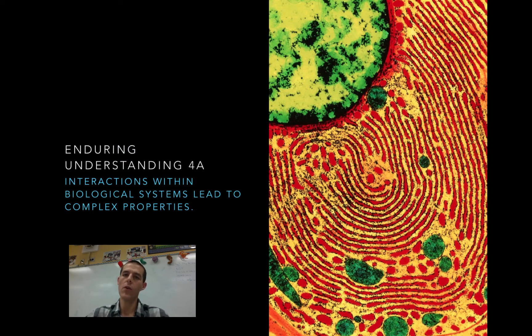We're going to start our search out in enduring understanding 4A, which is that interactions within biological systems lead to complex properties. Now, you're going to see a very common theme. There are three enduring understandings, and for each one, we are going to start out small and then zoom out to large. Each of the enduring understandings is going to start out looking at the molecular level. We're going to look at the way organic molecules interact with each other, and then from there, we'll move up to looking at interactions between cell components, so like organelles.